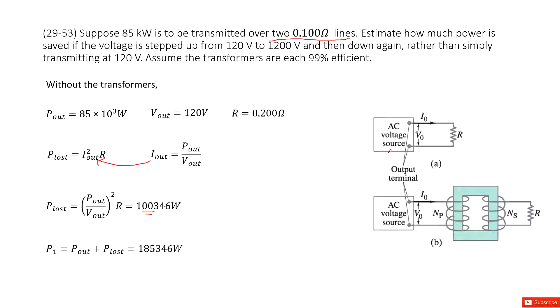the total power by this generator, we can see it is P₁. This is without the transformer. The power supplied by this generator, you can use P_out plus P_lost. And the number is there.